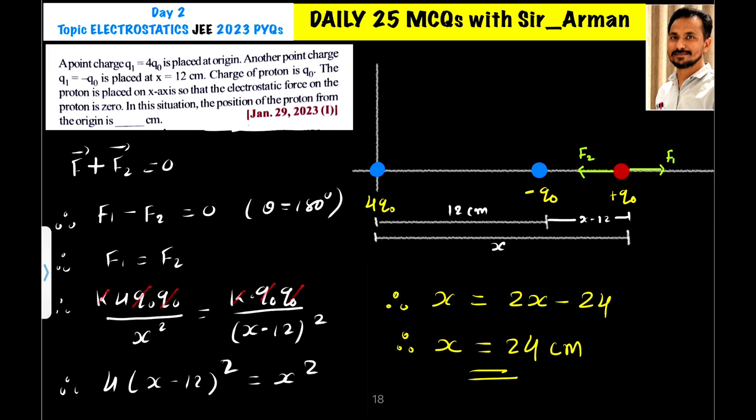As per the question, we have charge 4Q0 placed at the origin and another charge minus Q0 placed at 12 centimeters from the origin. We have one proton which we have to place at some distance so that the net force acting on the proton is zero.